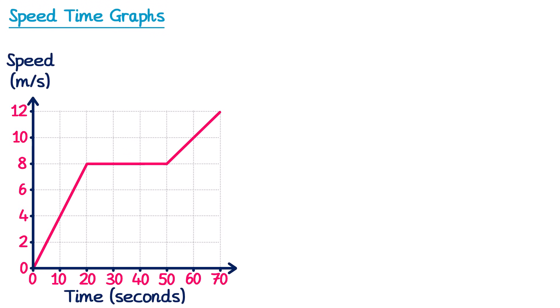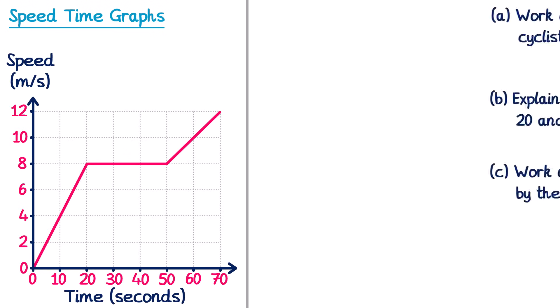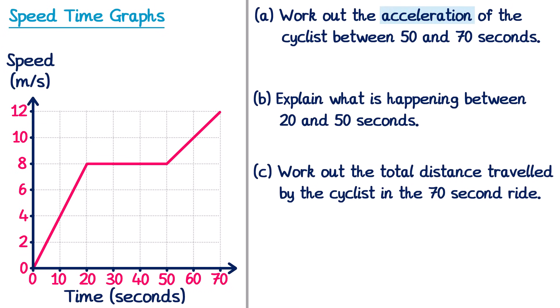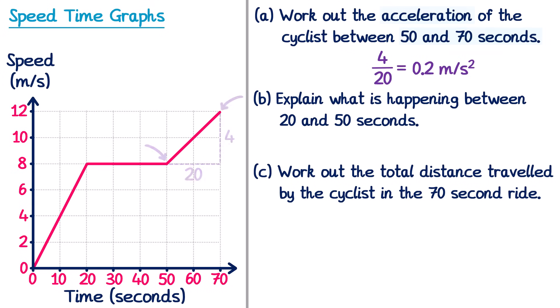Let's try a second example with a different speed-time graph. Part A: work out the acceleration of the cyclist between 50 and 70 seconds. The change in x is 20 and the change in y goes from 8 to 12, so that's 4. The gradient = 4 ÷ 20 = 0.2 m/s².